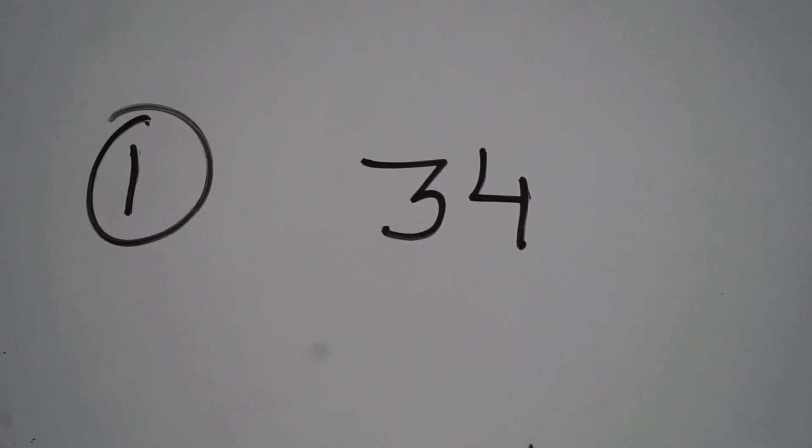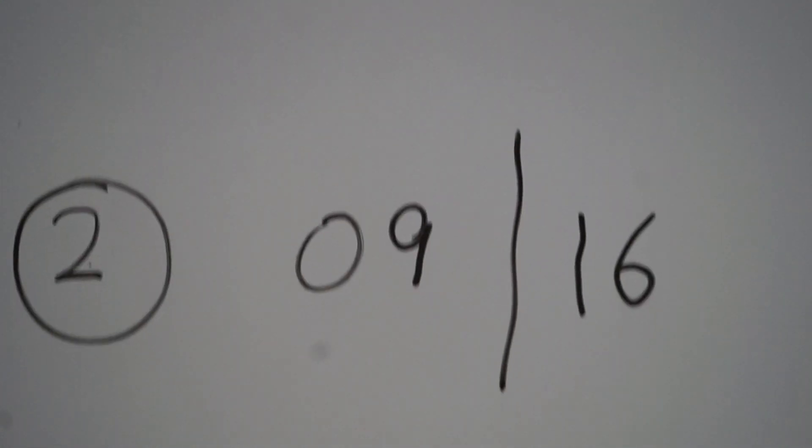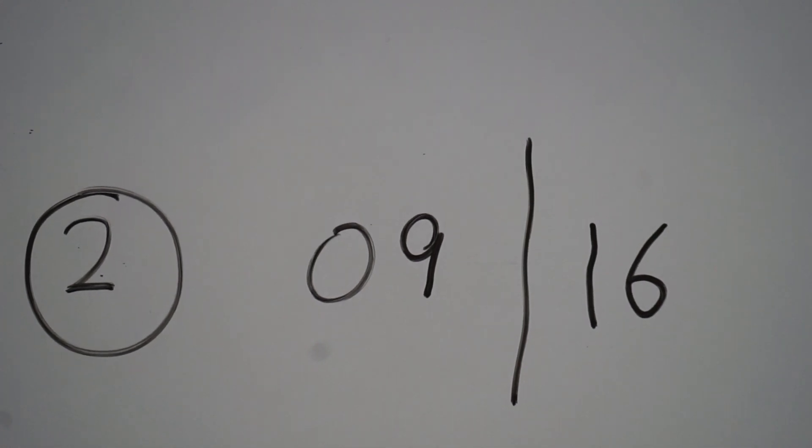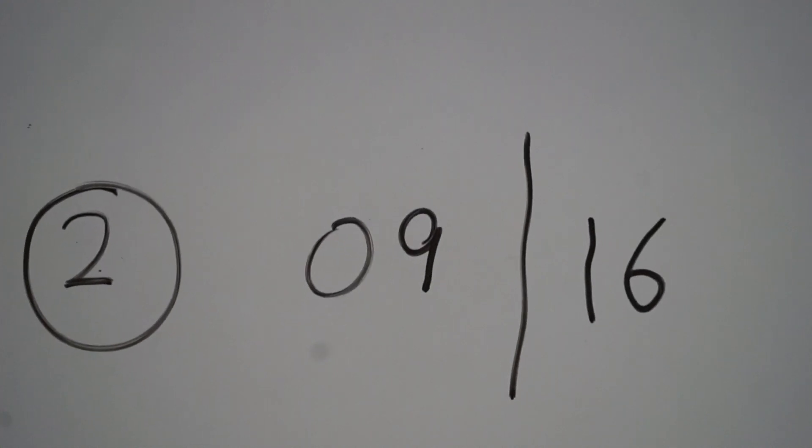Now you have to write the square of each digit of your two-digit number. The square of 3 is 9 and the square of 4 is 16. Now multiply the product of both digits by 2 and write it as directed here.